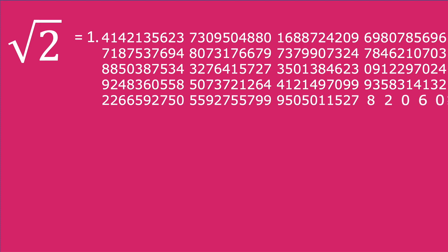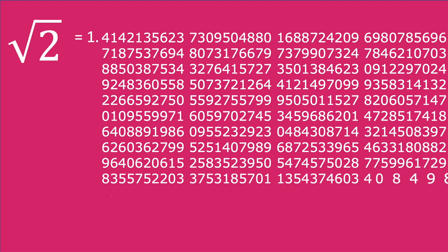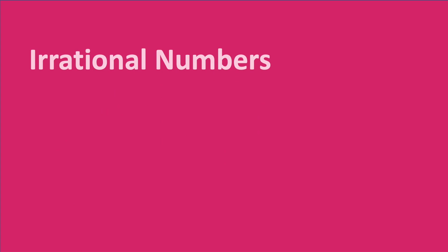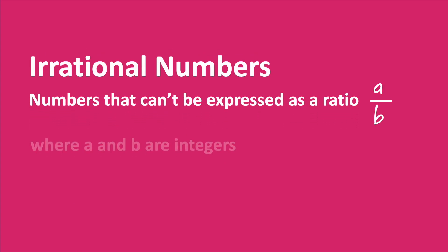Another one is the square root of two, which would be the length of the long side of an isosceles right-angled triangle, with smaller sides one unit in length. These are referred to as irrational numbers, which just means that, like we said, they can't be expressed as a ratio.